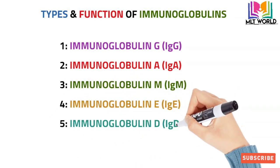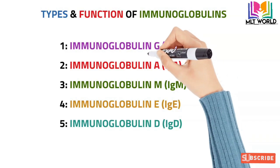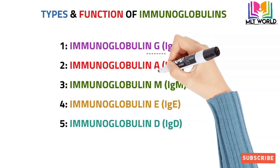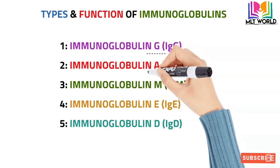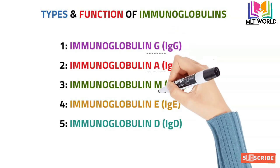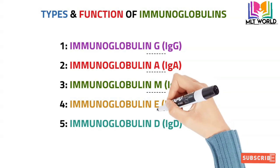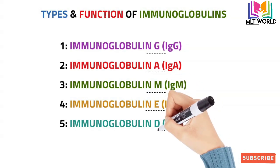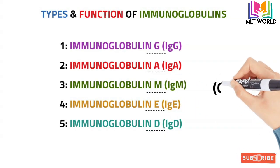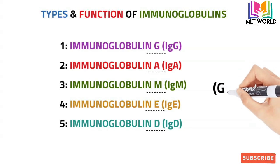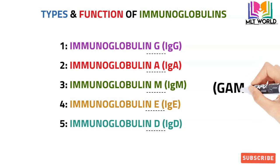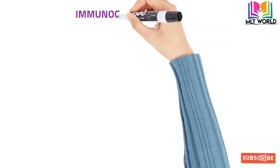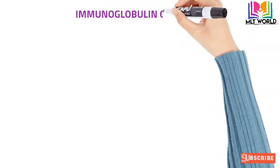Here is a quick formula to remember the types of immunoglobulin. If you remember the word GAMED — G, A, M, E, D — it will indicate each type of immunoglobulin. So from this formula you can remember all five types.